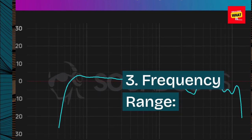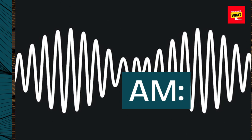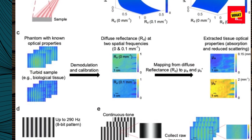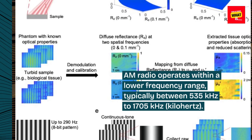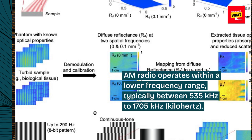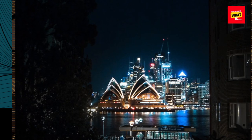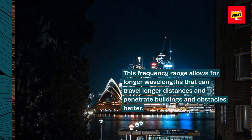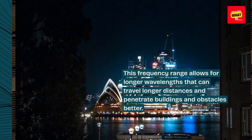3. Frequency range. AM radio operates within a lower frequency range, typically between 535 kHz to 1705 kHz. This frequency range allows for longer wavelengths that can travel longer distances and penetrate buildings and obstacles better.